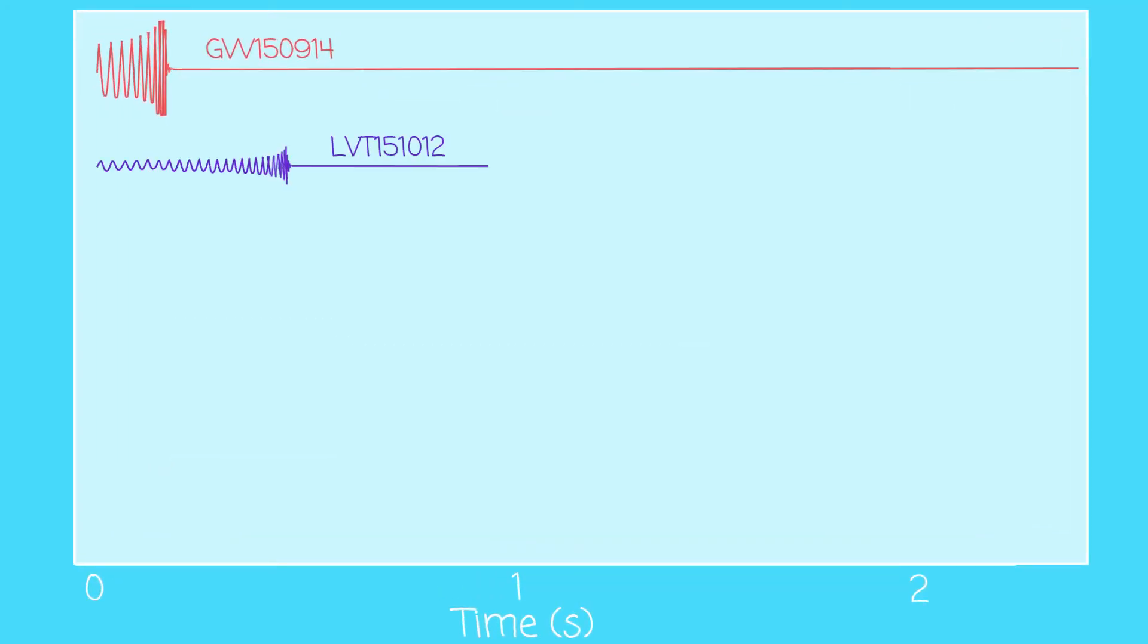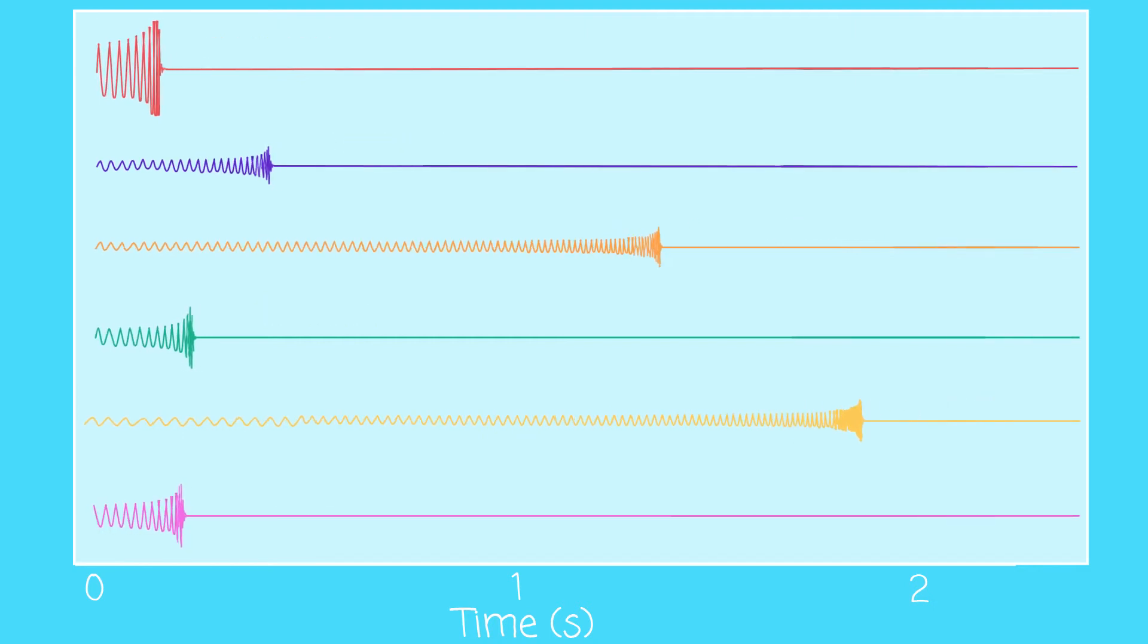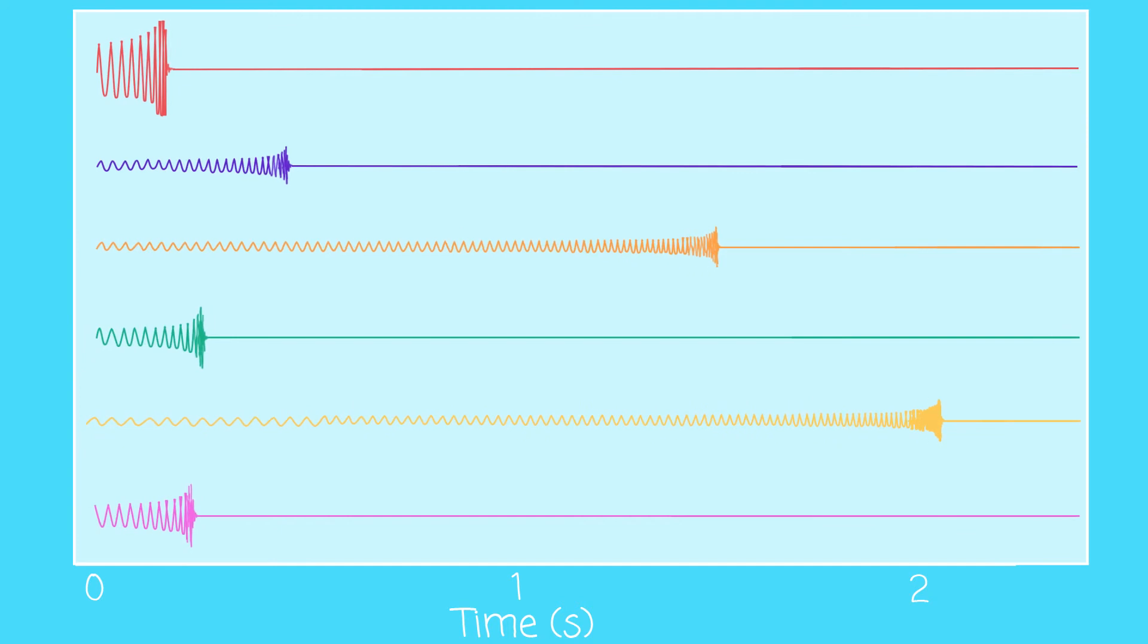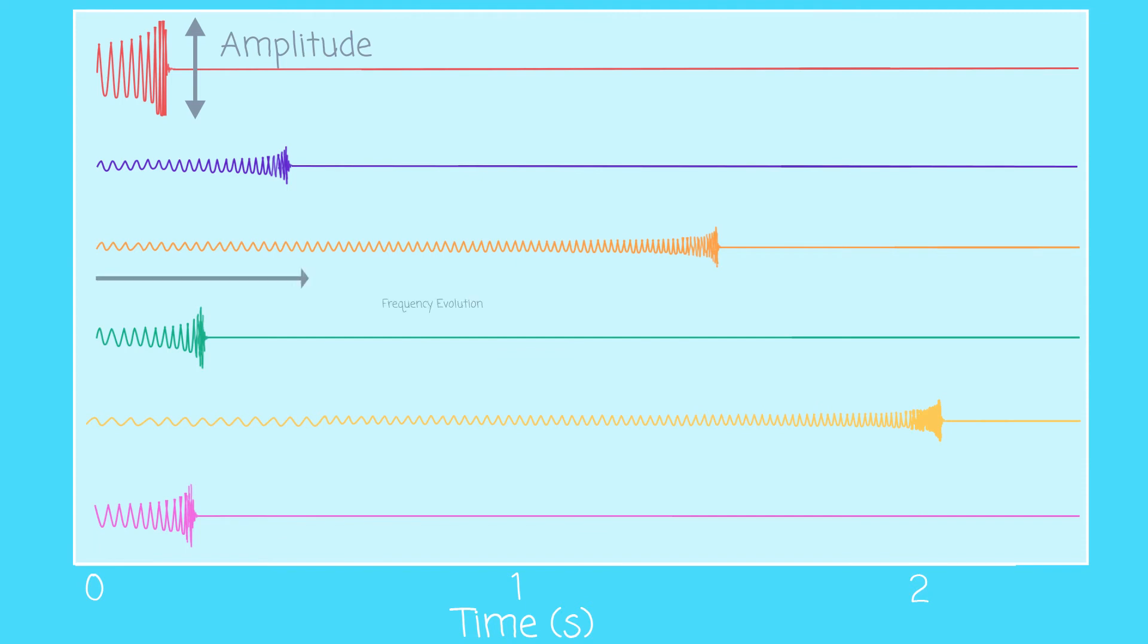This was the first gravitational wave source detected, but there have been more since then. The signals vary for each merger event. The higher the frequency of the collisions, the lower the combined masses of the black holes, and the higher the amplitude, the closer they are. We can also work out the masses of the two black holes relative to each other and whether they are spinning by looking at how the frequency and the amplitude evolve over time.